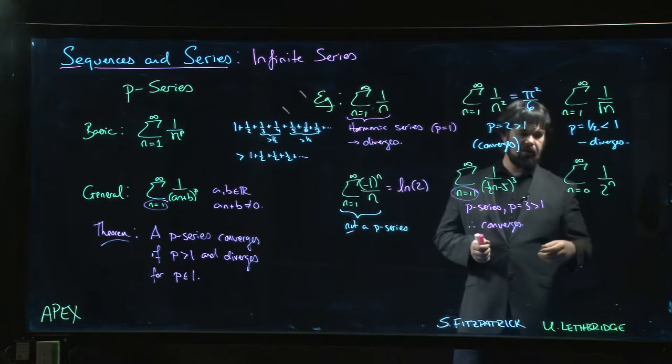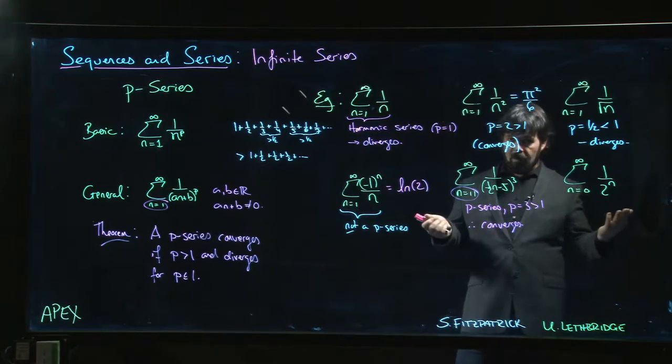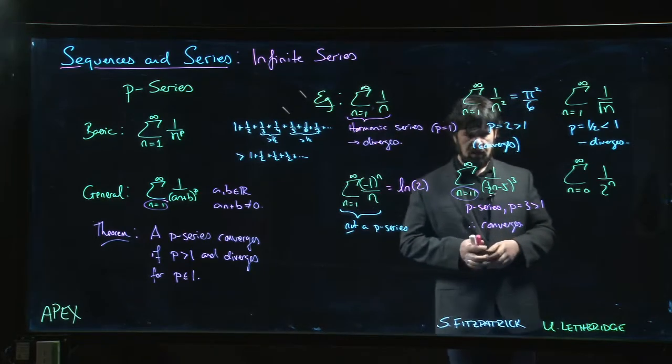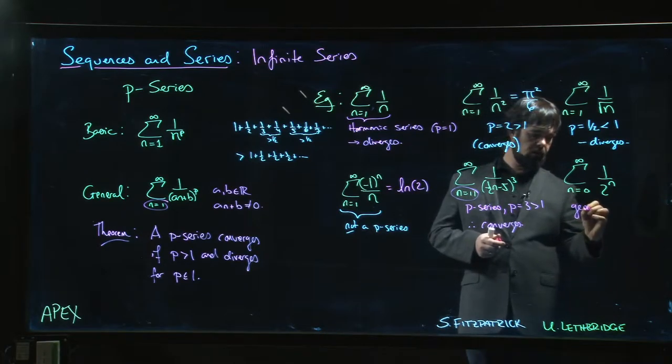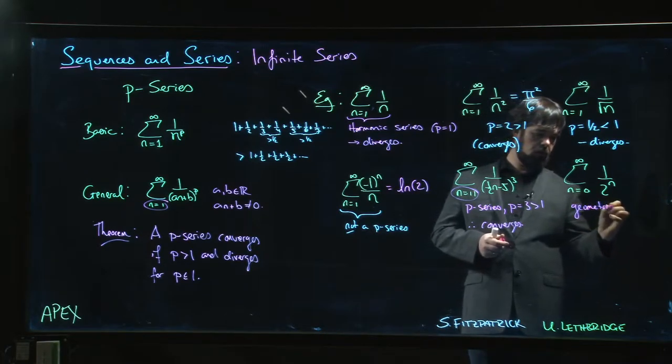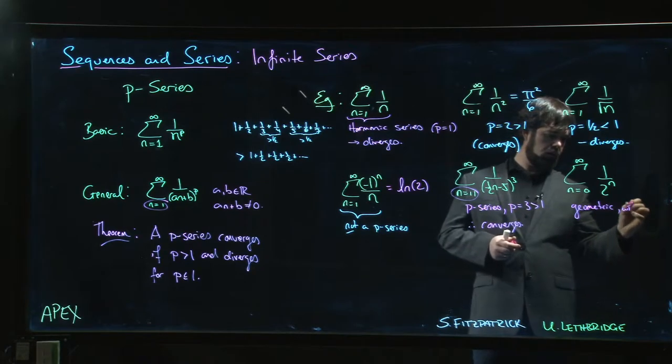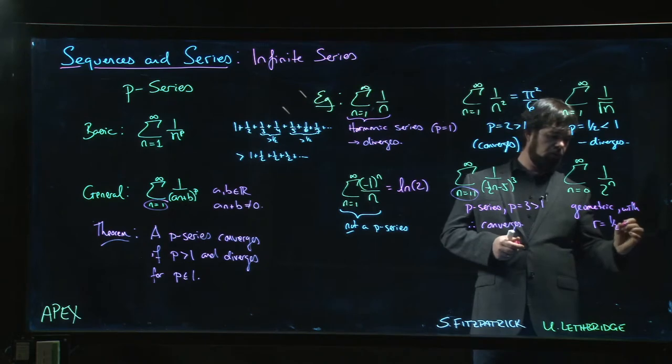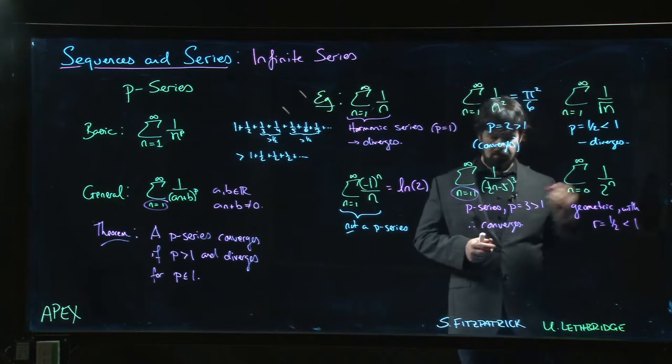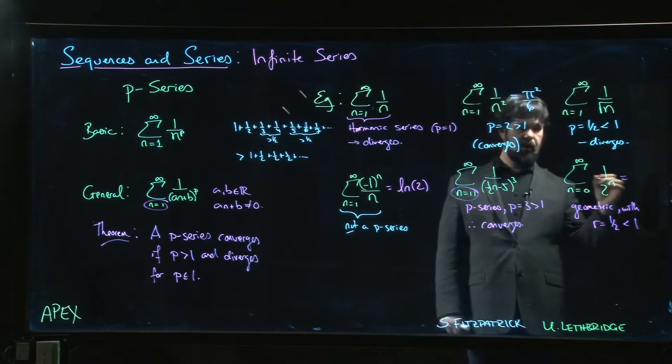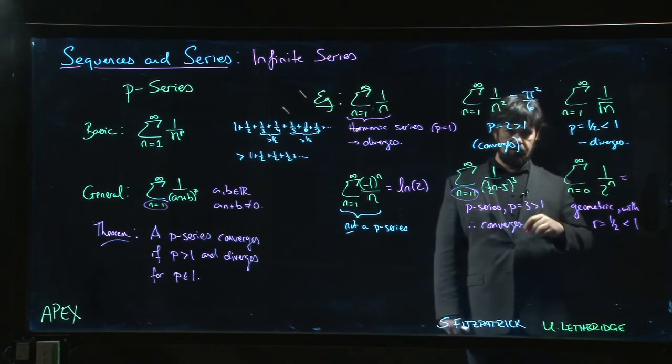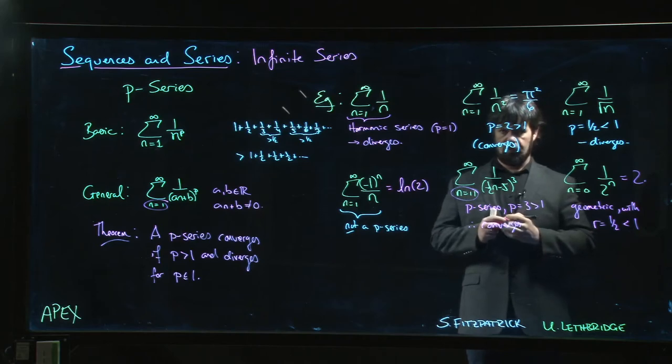Last one - the last one is not a p-series. The last one is geometric series. Fortunately, we've already done that. This is geometric. It's not a p-series, but it's geometric with r equal to 1 half. And of course, 1 half is less than 1 in absolute value. So we know that this converges. And actually, we know what it converges to. We saw this in the introduction video. Converges to 2.